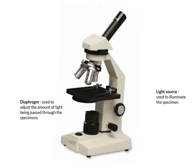Next is the light source. In today's microscopes, the light source is built directly into the microscope. Early microscopes used either a candle or a mirror to reflect light. Microscopes also have a diaphragm, which is either a dial or a lever that controls the amount of light shown through the specimen. Some specimens are better viewed using minimal light, whereas others are better viewed using full light, so adjusting the diaphragm helps the viewer better see the specimen.